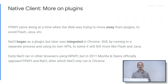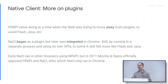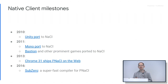This had an impact on adoption. Early NaCl ran in other browsers using NPAPI, the same way Flash did. But in 2011, Mozilla and Opera announced that they oppose NaCl and Pepper. Since that point, NaCl only ran in Chrome, essentially. So adoption was an issue.